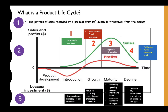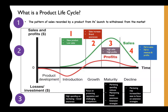In stage four, where sales are expected to decline, the business will look at reducing its marketing expenses because sales are dropping. They may not want to spend too much, not knowing how long the product can remain. However, they may still want to focus on extension strategies to keep the product between maturity and decline for longer before it completely ceases to exist.